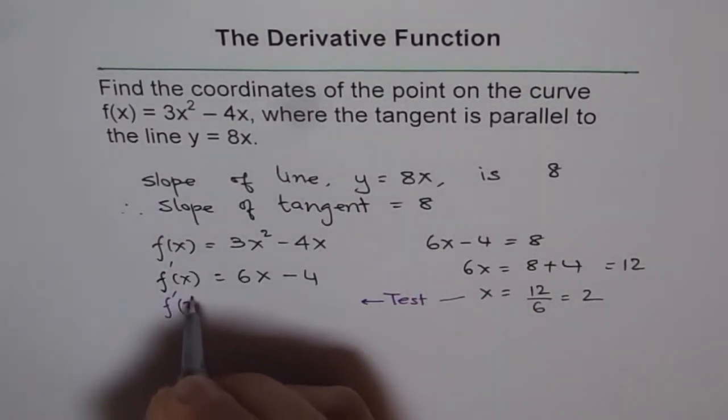We got the x-coordinate of our point. That means f'(2) is actually 8. Let us test it before we go further. What is f'(2)? f'(2) = 6(2) - 4 = 12 - 4 = 8. Yes, so this confirms what we wanted.